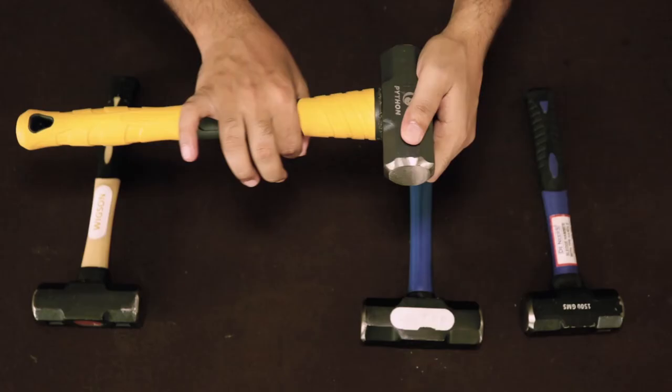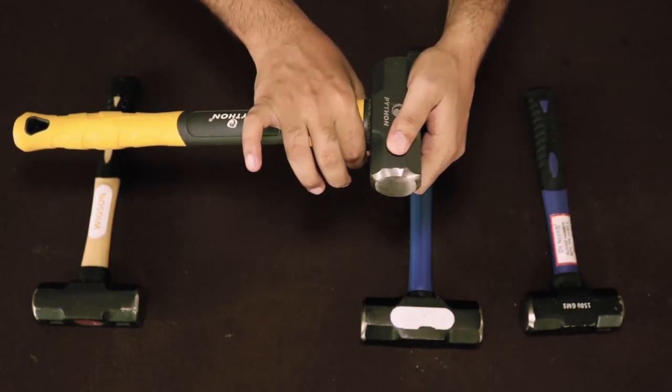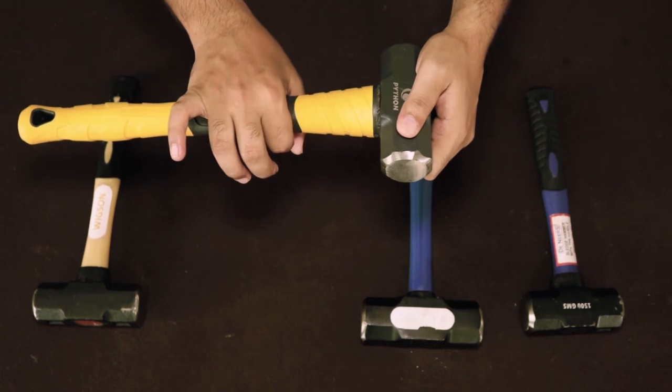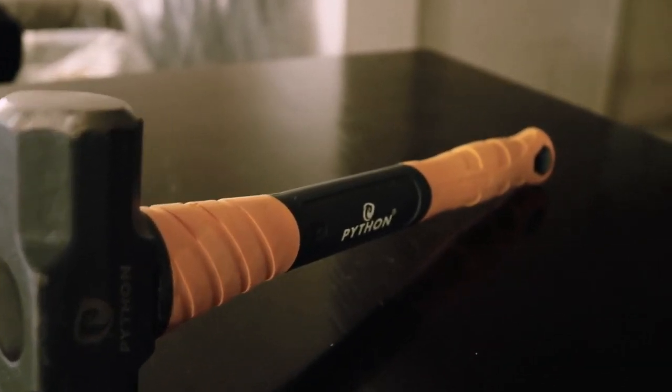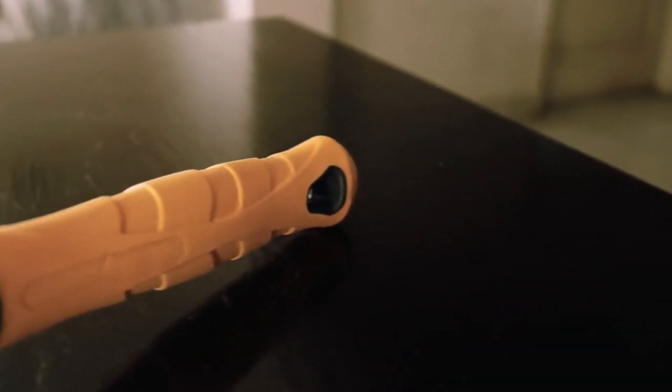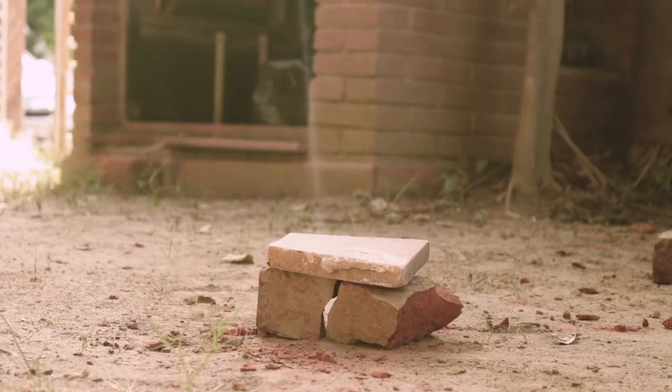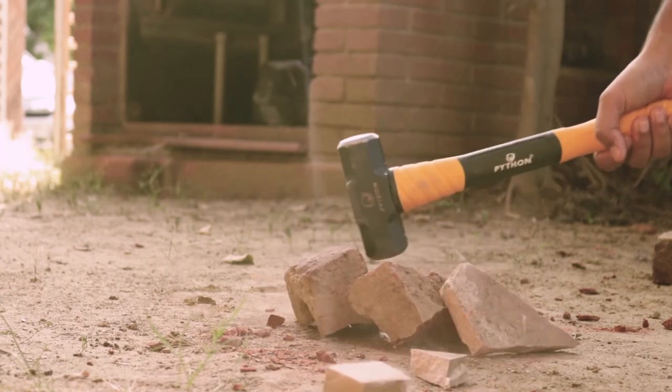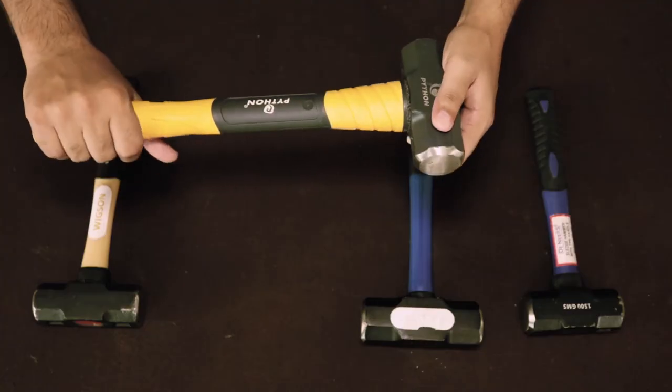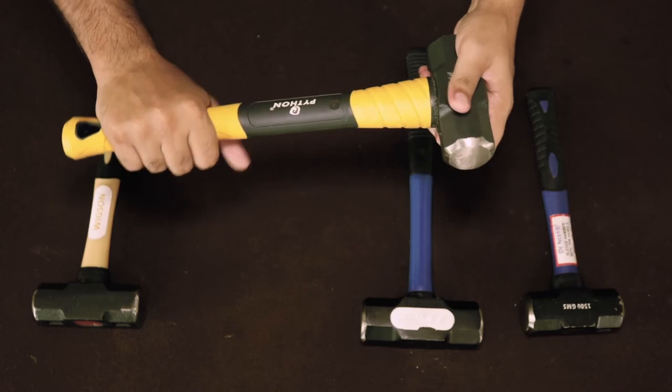If you talk about the overstrike protector, its overstrike protector is compared to the other hammers very large. So if you miss-hit your target, or your sledgehammer strikes, then not only will the handle not damage, but you will not feel shock and vibration.